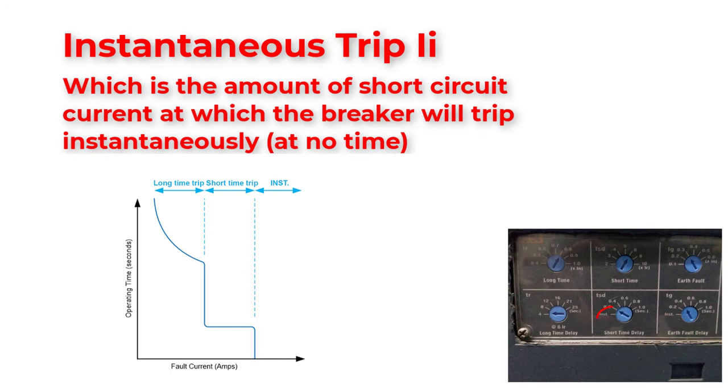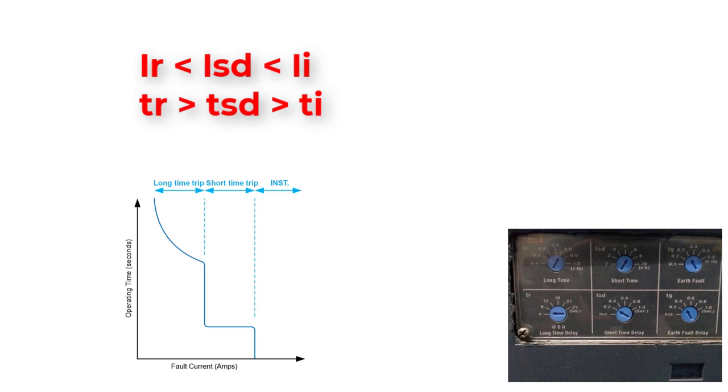Instantaneous trip current is the trip of short circuit at which the circuit breaker will trip instantaneously. So for better coordination, the current of long time delay trip should be less than the current of short time delay trip, which also should be less than the instantaneous trip current. And vice versa, the time of long time trip should be longer than the short time trip should be longer than the instantaneous time.